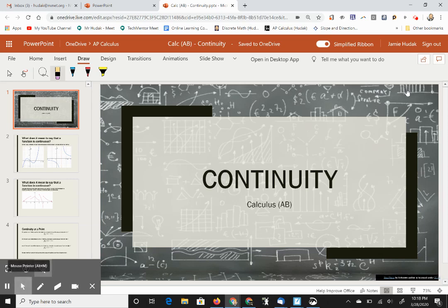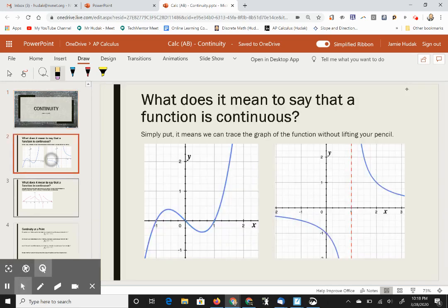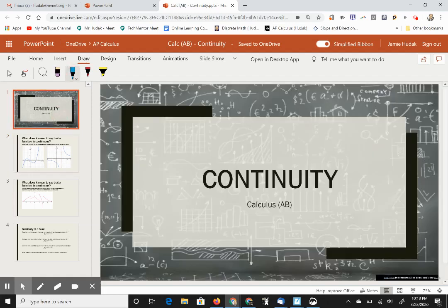I'm going to leave my Screencastify selected on mouse. That allows me to navigate through my slideshow. And I'm going to use only my PowerPoint ink. So this is continuity. Now I'm going to tap the next slide.